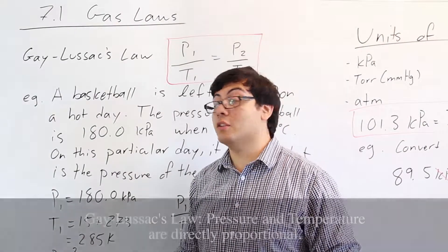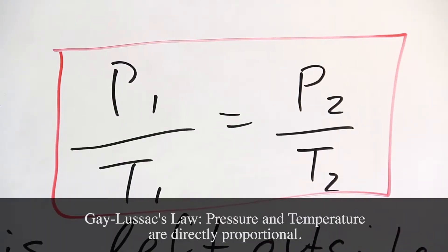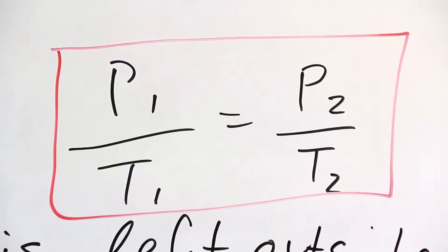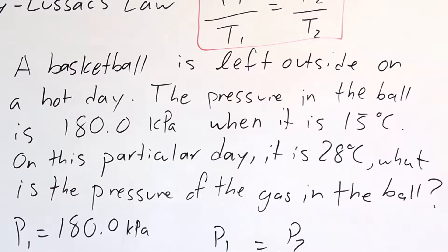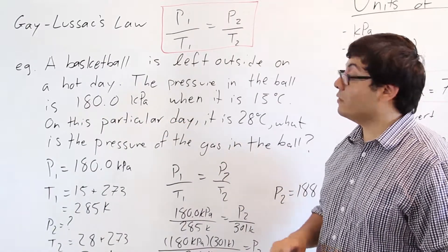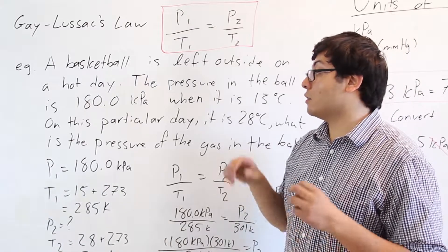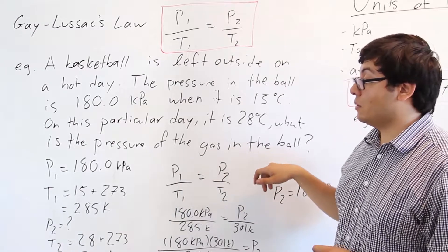So the last law that you guys have to know is Gay-Lussac's law, and it says that pressure and temperature are directly proportional. So we can write it as P₁ over T₁ equals P₂ over T₂. So let's do an example. So we have a basketball, and it's left outside on a hot day. The pressure in the ball is 180 kilopascals. We'll get to the units later, just know it's a unit of pressure. So it's 180 kilopascals when it's 15 degrees Celsius. On this particular day, it's 28 degrees Celsius, and we need to know the pressure of the gas inside the ball.